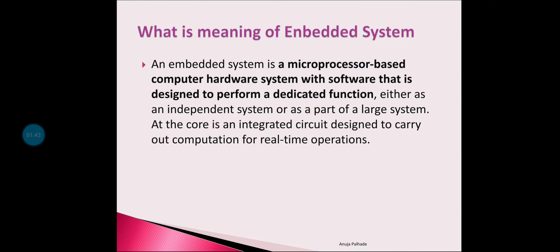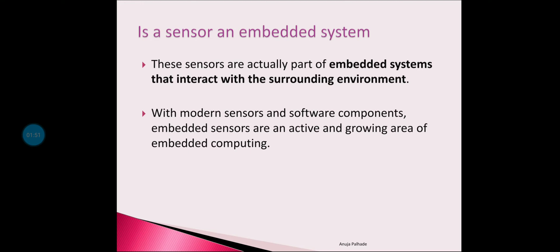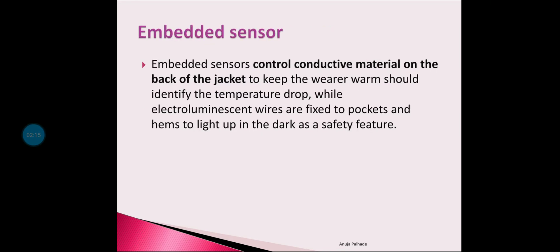An embedded system is a microprocessor-based computer hardware system with software designed to perform a dedicated function, either as an independent system or as part of a larger system. At its core, it is an integrated circuit designed to carry out computation for real-time operations. Now focusing on sensors — a sensor is part of an embedded system that interacts with its surrounding environment.